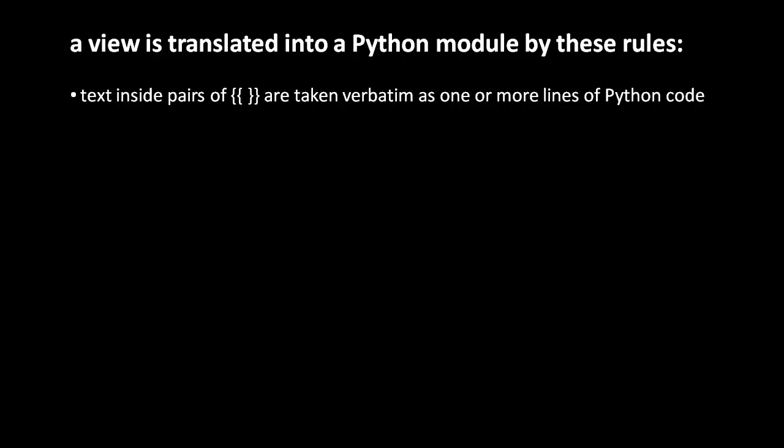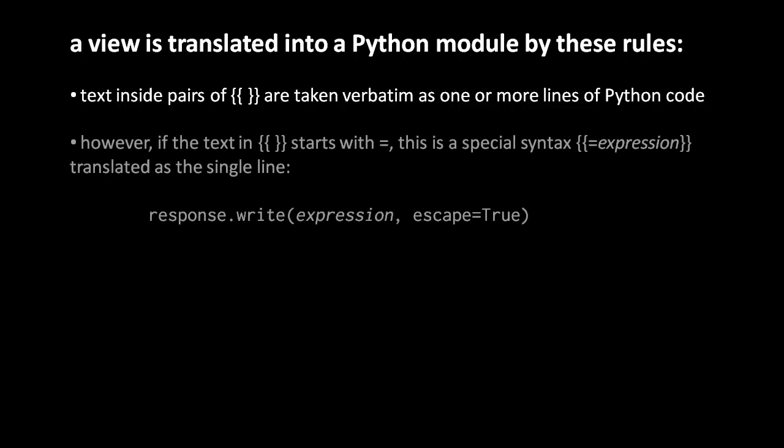It's one or more lines of Python code. However, there's an exception whereby if the first character inside the double braces is an equal sign, then the text that follows should be a single Python expression, and these double curly braces are translated into a single line of response.write with the expression as the first argument and the escape argument given the value true.